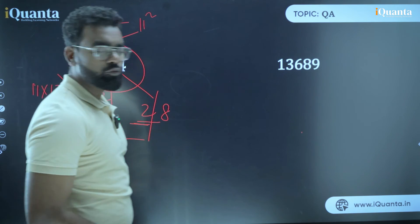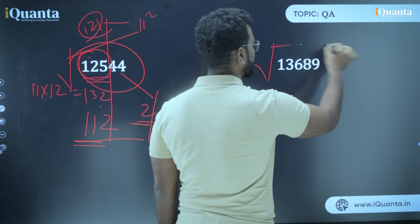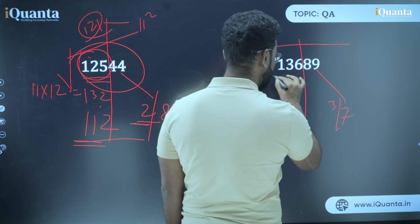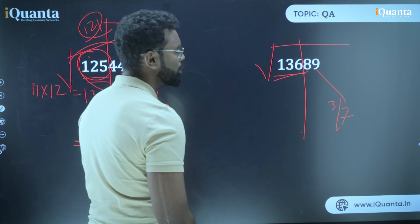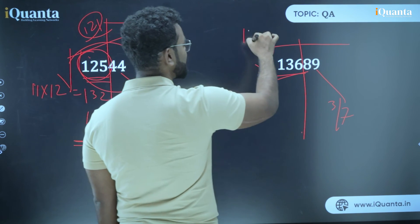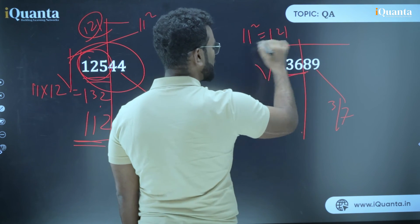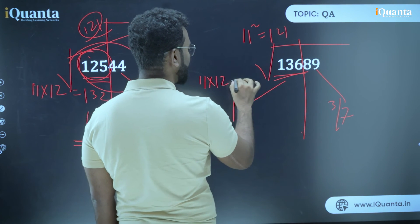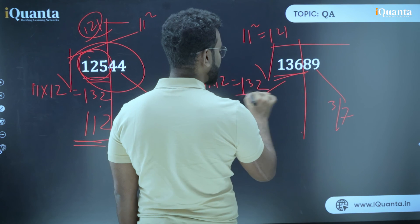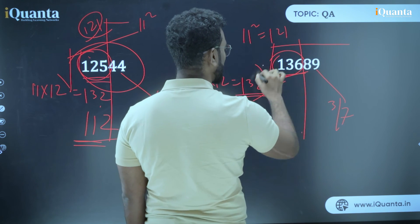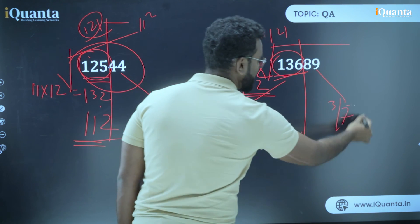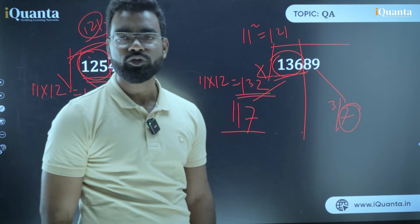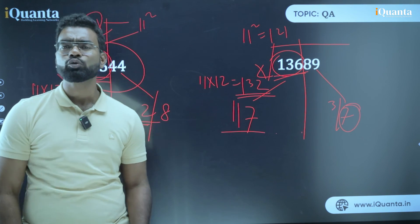Next: √13689. The unit digit is 9, so the two possibilities are 3 and 7. For the remaining digits 136, the closest perfect square less than 136 is 121, which is 11 squared. So the initial digits are 11. Then 11 × 12 = 132. Since 136 is more than 132, take the bigger unit digit. So the answer is 117.